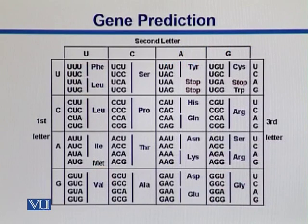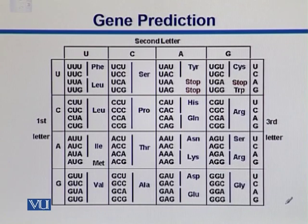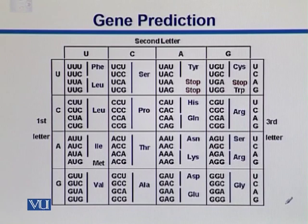Since we are talking about those codons — the triplet codons — here is how it looks. This is the codon table. Our first letter is U. Sometimes it is written with U's and in some literature you would find T, but never mind — U is T and T is U in messenger RNA.